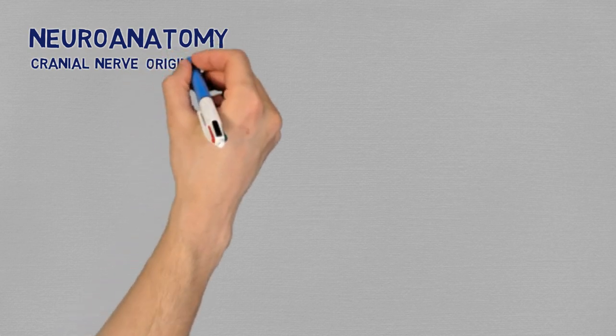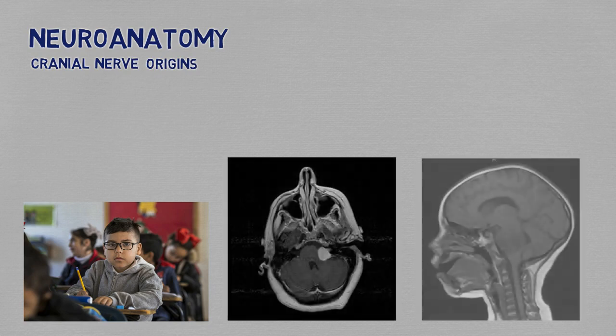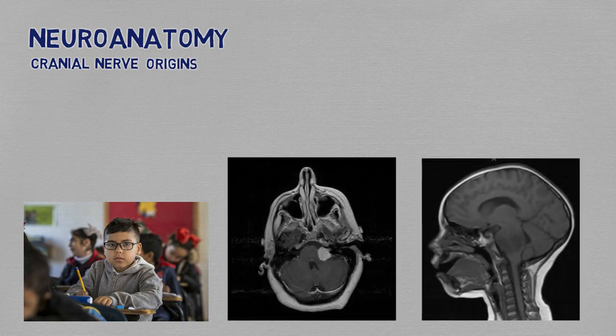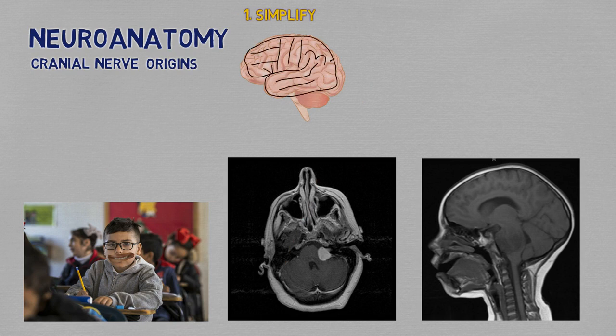We're going to explore and demystify the anatomy of the origins of the cranial nerves. This is something a medical student is commonly tested for and is also really important when looking at lesions on brain scans and correlating them with clinical deficits. We're going to do two things to make this exercise easier: simplify the anatomy to include enough information to recognize things in an actual brain, but omit everything else that would be just noise and distraction.